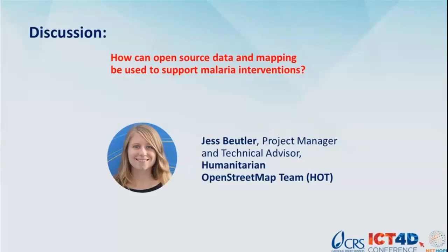This means that 50,000 buildings in Botswana and around 6,000 in Guatemala are now in OpenStreetMap with additional data that can be used not only for malaria control work, but are also being looked at for other campaigns in the public health sector, such as TB and HIV/AIDS campaigns. That's an overview of how we've used open data for these malaria interventions.